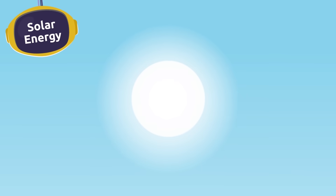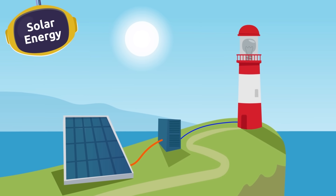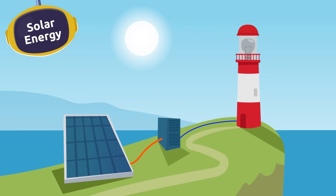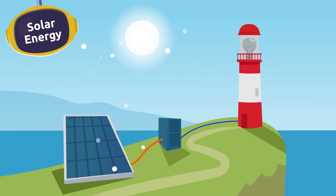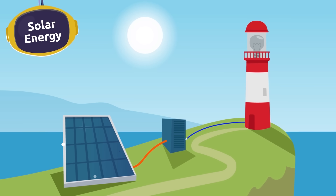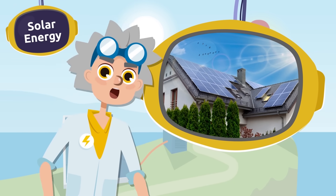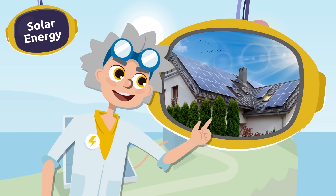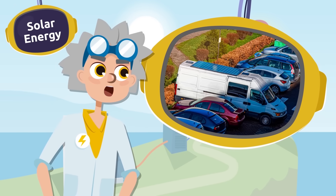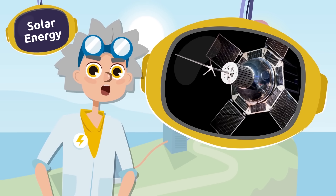Lastly, we will talk about the energy we can use from the Sun — this is called solar energy. On a sunny day, the solar panels capture the solar energy from the Sun and transform it into electricity. Solar panels can be found on buildings, cars, boats, and space satellites.